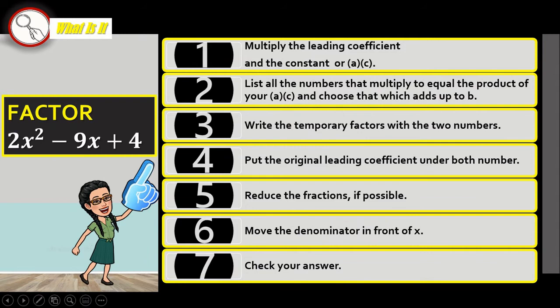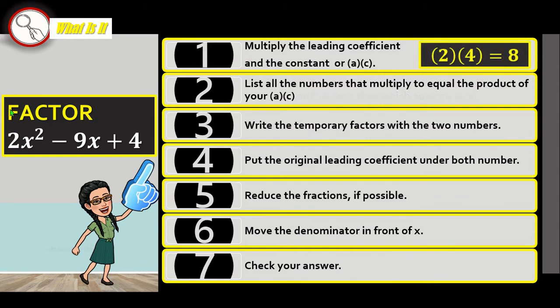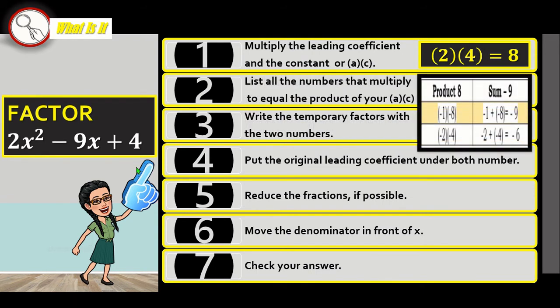Good job. Let's have our second example. Again, multiply your A and your C. Next, list all the factors that will get you the sum of the middle term when you add them.